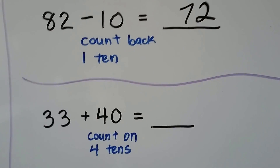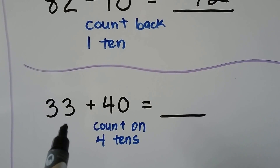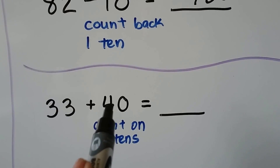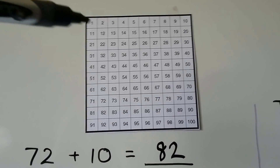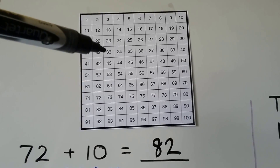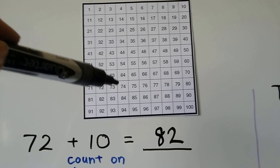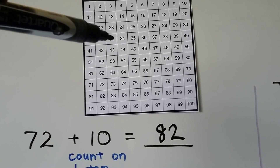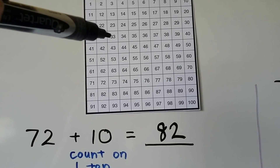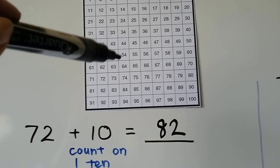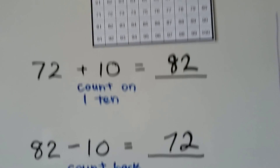Let's try another one. We have 33 plus 40. We start at the 33 and count on four tens: 43, 53, 63, 73. That's four hops for four tens — we started at 33 and went one, two, three, four, and it brought us to 73.